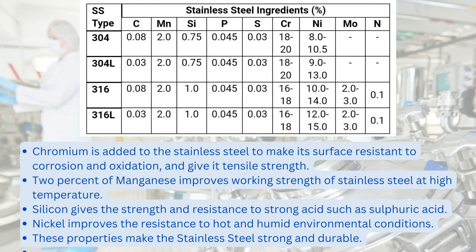2% of manganese improves the working strength of stainless steel at high temperatures. Silicon gives strength and resistance to strong acids such as sulfuric acid. Nickel improves resistance to hot and humid environmental conditions. These properties make stainless steel strong and durable.